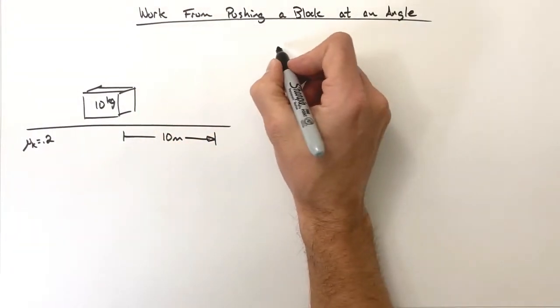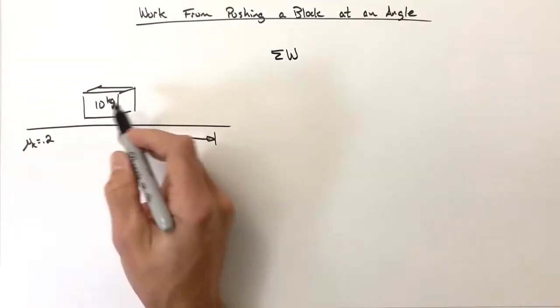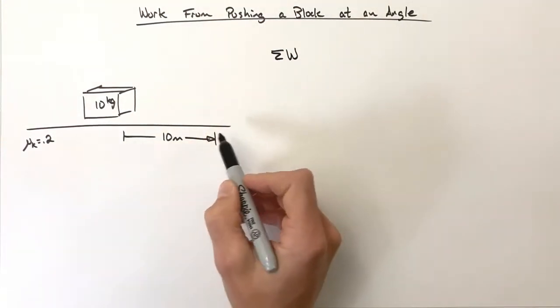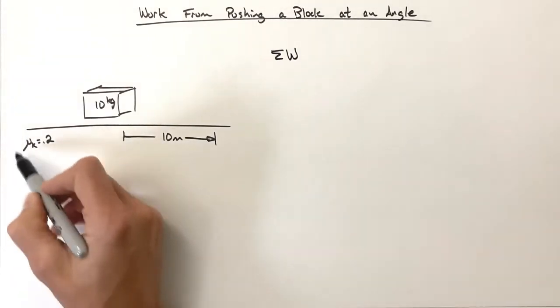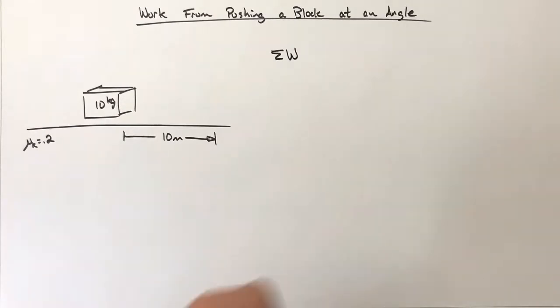Okay, just like in the last problem, we're going to solve for the sum of all work done on this block as we pull it 10 meters along the horizontal surface. This surface has a coefficient of kinetic friction of 0.2.